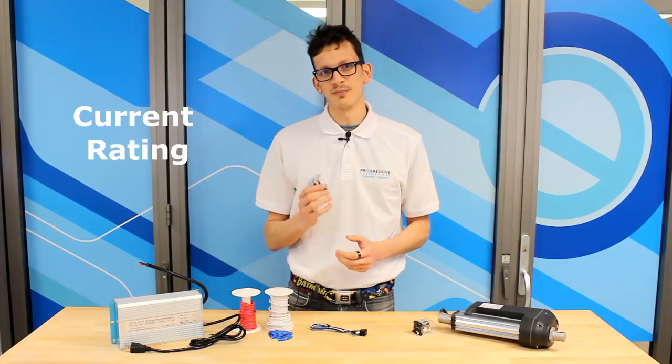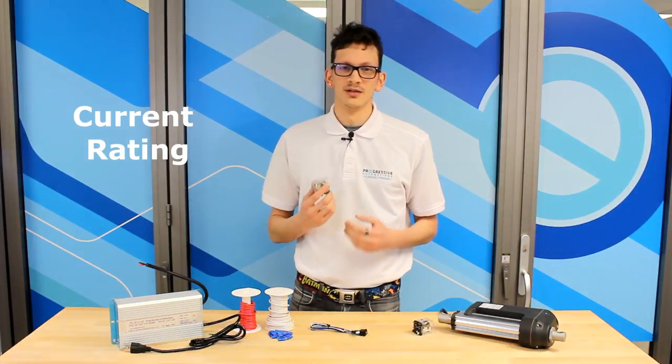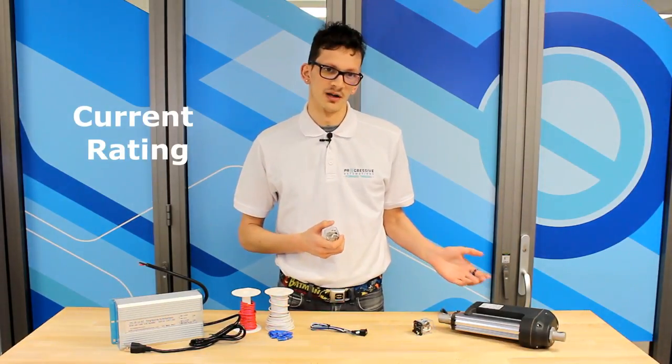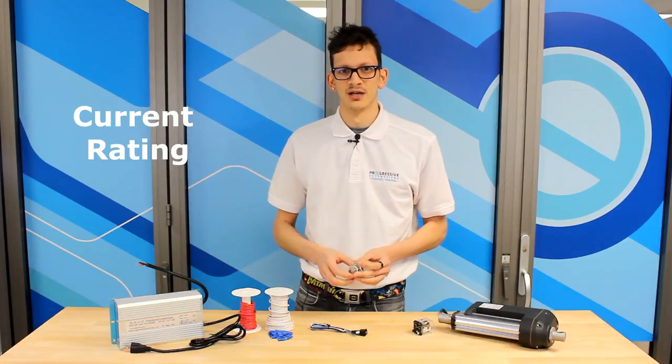Current rating: The relay must be able to handle the current of your load. Since we are using a PA13 linear actuator, the load is 20 amps at full force. A current rating of 20 amps on the relay is required.